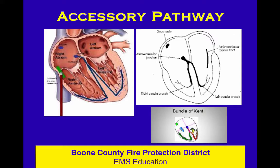A trivia question: what is that accessory pathway called? The bundle of what? It's the bundle of Kent. We have Bachmann's bundle and we have the bundle of Kent. It's shown here in a particular location on the right side of the heart, and in a couple of the diagrams on the left side. It can be anywhere where it jumps across the atria to the ventricles — it doesn't have to be in one particular spot. Wherever it's at, we call it the bundle of Kent.